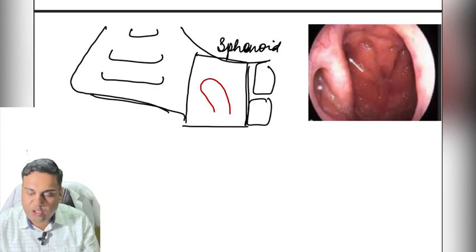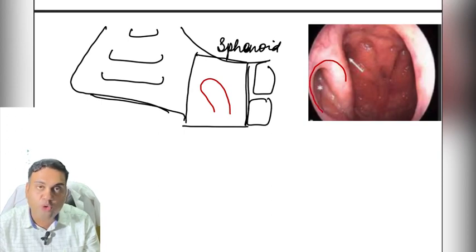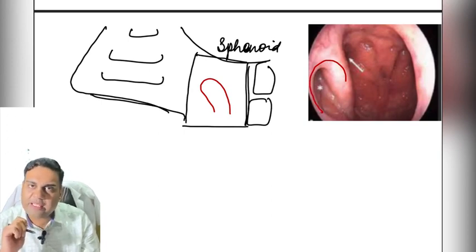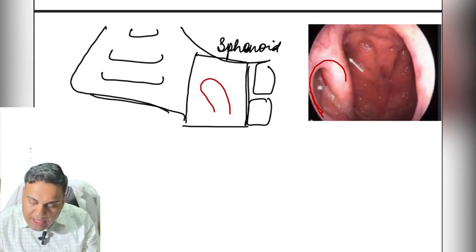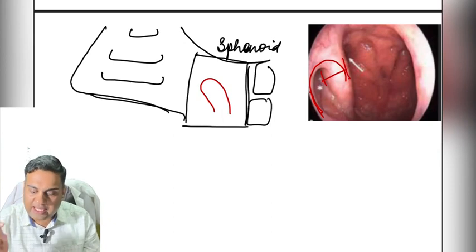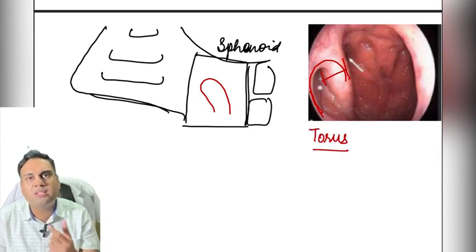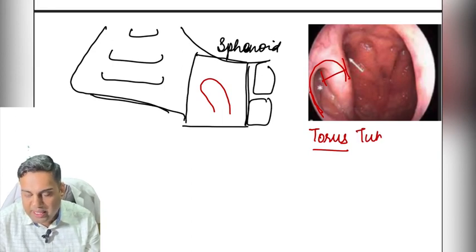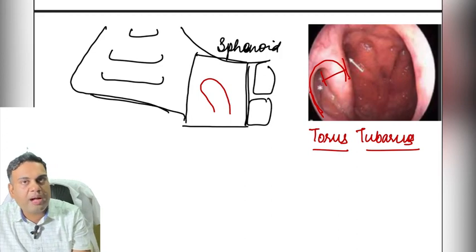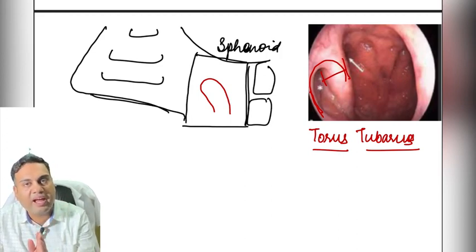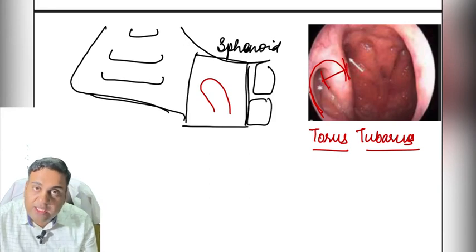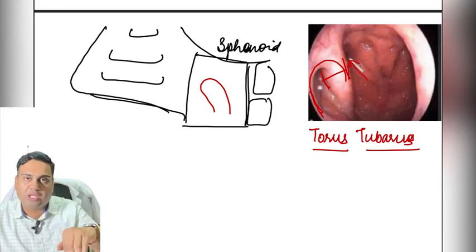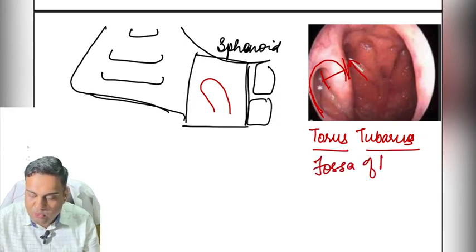The most important structure seen in the nasopharynx is the Eustachian tube opening on the lateral side. On nasal endoscopy, we can see that the anterior part of the Eustachian tube opening has a thin wall, while the posterior part has a thick wall. This thickening — called a torus — gives rise to the name torus tubarius. It consists of Osman's pad of fat and cartilage. Behind the torus tubarius lies a fossa called the fossa of Rosenmüller.